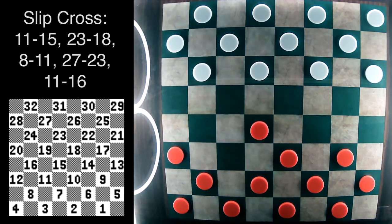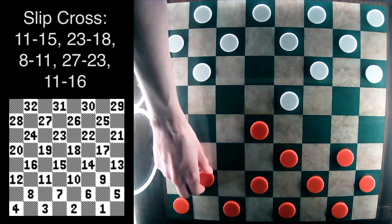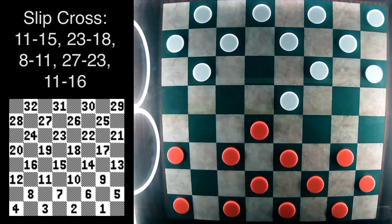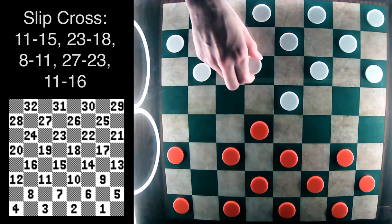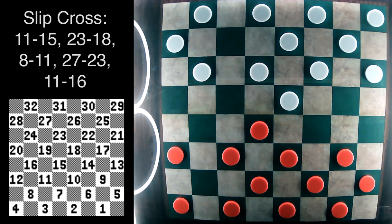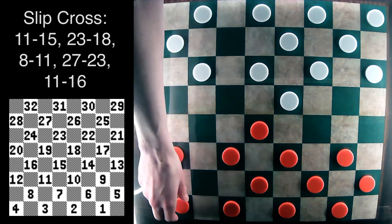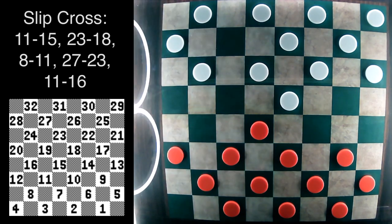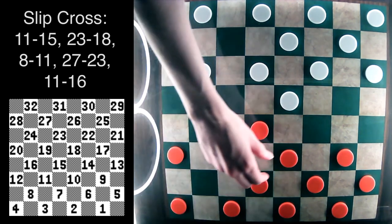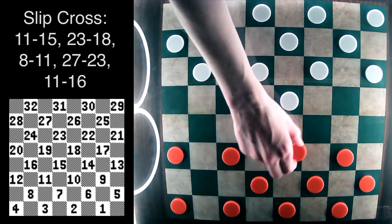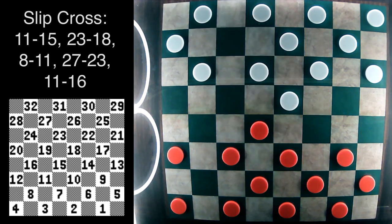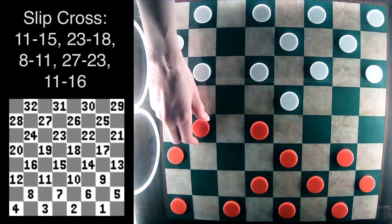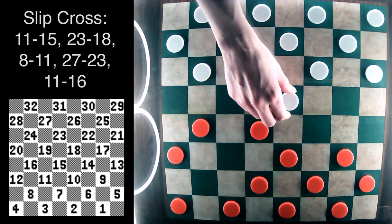The opening begins like a traditional cross: 11-15, 23-18, 8-11, 27-23, and instead of the typical 4-8 or 10-14, red has this 11-16 move, temporarily giving up a piece.